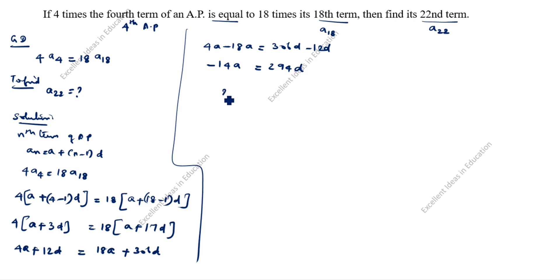Next step, 294d plus 14a is equal to 0. We will take 14 outside. So, 14, open the bracket.